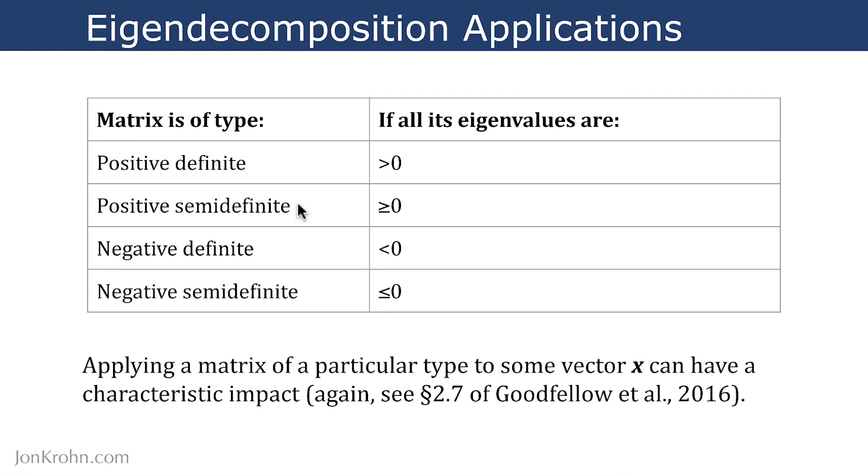It also means that the volume of the tensor that we apply a positive or negative semi-definite matrix to will end up being collapsed in at least one dimension. So we talked about that in earlier videos in a lot of detail. I'm not going to dig back into that a whole bunch right now.